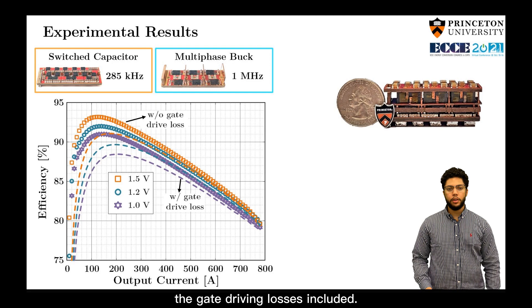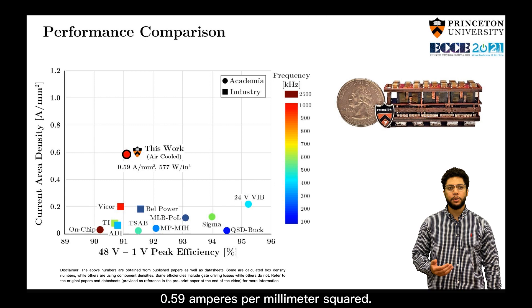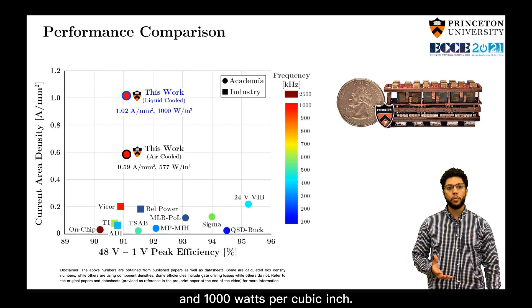We benchmarked our converter with other 48 volt to one volt converters, both from academia as well as from industry, and ours maintains a good efficiency while achieving a density of 0.59 amps per millimeter squared. With the liquid cooling setup, we achieve 1 amp per millimeter squared and 1000 watts per cubic inch.